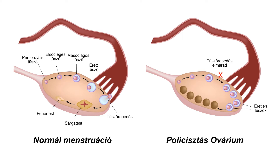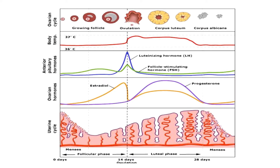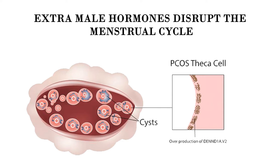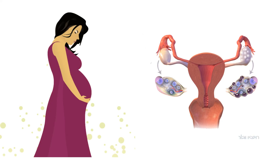These sacs are actually follicles, each one containing an immature egg. The eggs never mature enough to trigger ovulation. The lack of ovulation alters levels of estrogen, progesterone, FSH, and LH. Estrogen and progesterone levels are lower than usual while androgen levels are higher than usual. Extra male hormones disrupt the menstrual cycle, so women with PCOS get fewer periods than usual.